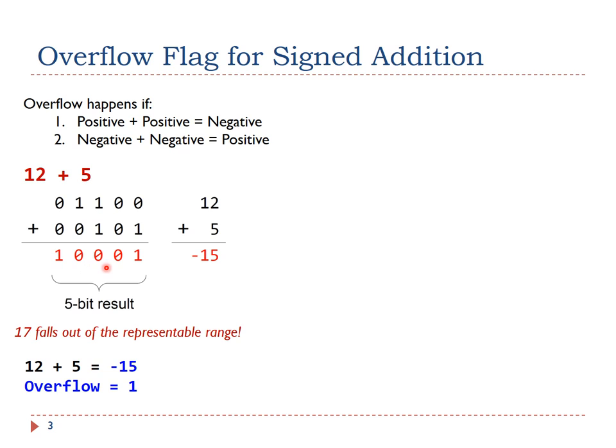The result is 10001, which represents negative 15 in two's complement. This happens because the correct result 17 is larger than the maximum representable number 15.